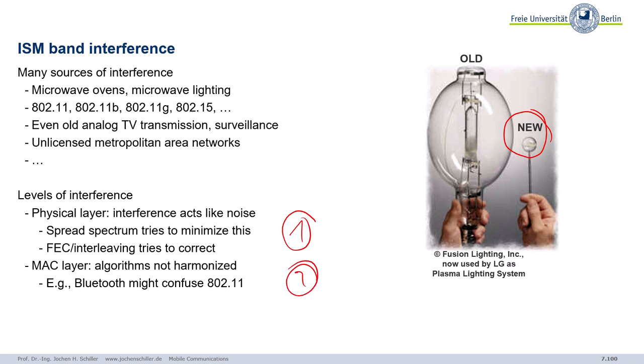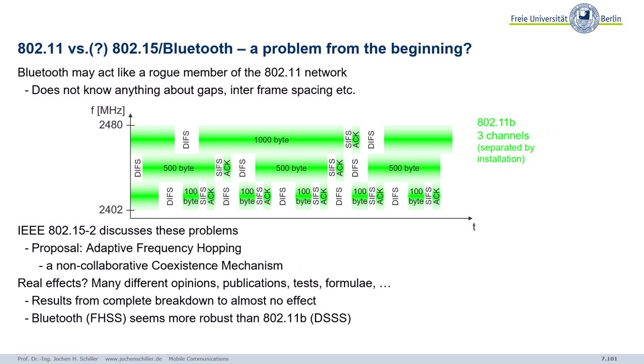There is also a non-harmonized MAC layer, meaning layer-one and layer-two problems coexist. For example, Bluetooth might interfere with wireless LAN. Bluetooth does not implement carrier sensing — it doesn't know or care about it. This was a major topic in the early days of Bluetooth. A diagram shows wireless LAN operating on three separate channels with proper DCF interframe spacing, acknowledgements, and data transmissions — a very clean scheme.